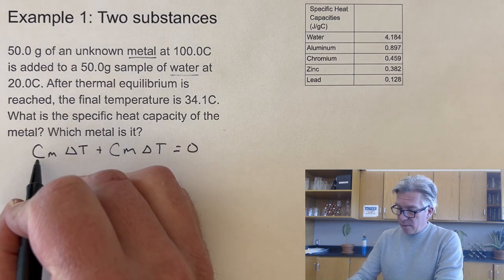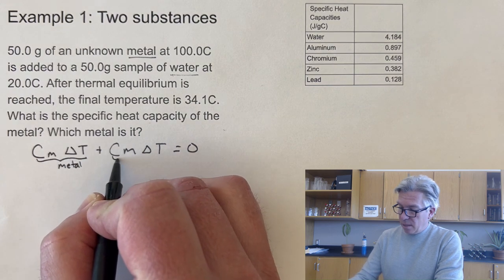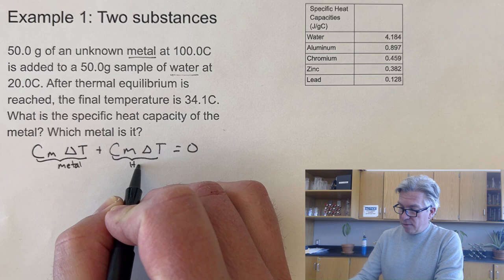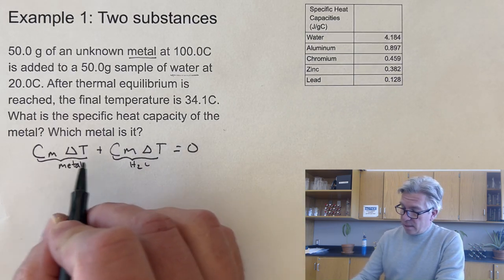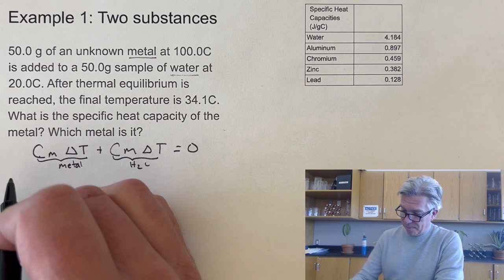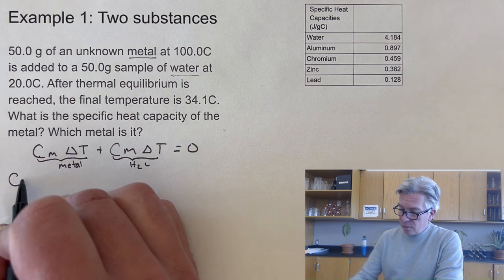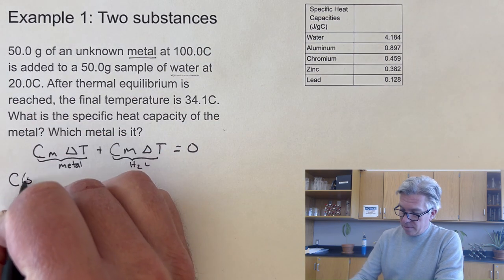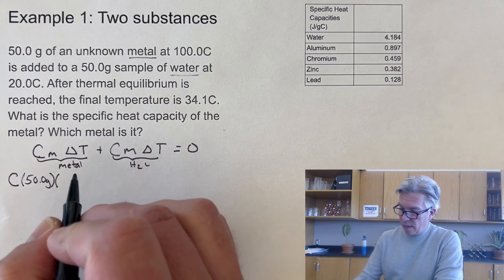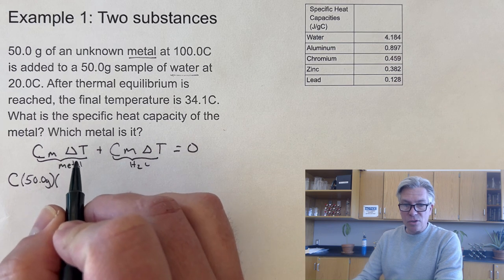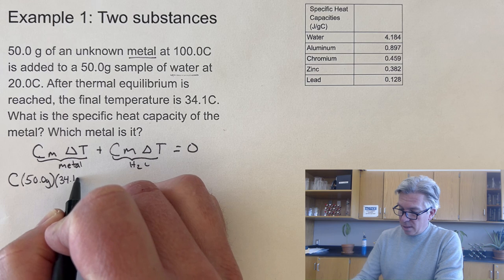What I should really do is write down my equation: C m ΔT plus C m ΔT equals zero. Then I want to assign one side to the metal and one to water. I don't know the heat capacity of the metal, so that's what I'm going to solve for. I do know the mass of the metal is 50 grams. And the temperature change: final temperature is 34, initial temperature is 100.